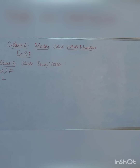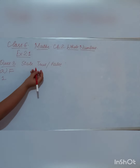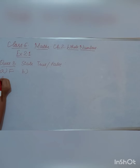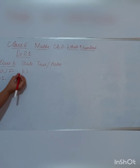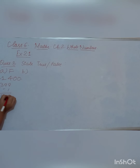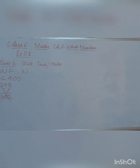The second part says: '400 is the predecessor of 399.' The predecessor means the number minus 1. So if we take 400 and do minus 1, we get 399. That means 399 is the predecessor of 400, not the other way around. So this statement is also false.